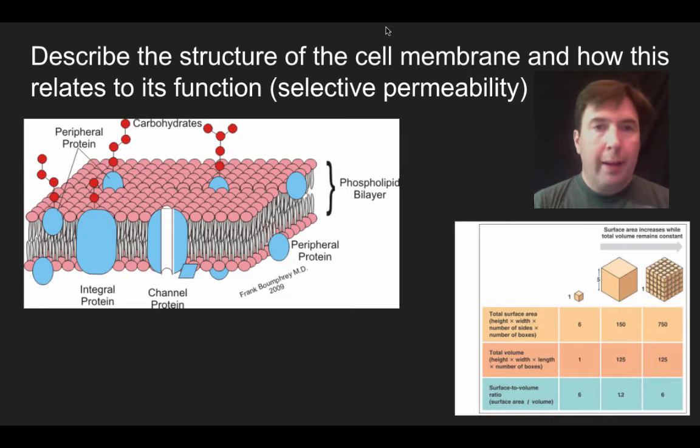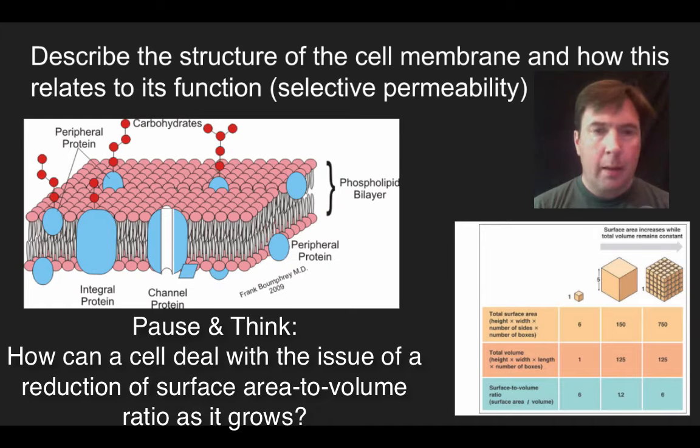So what I'd like you to do is pause and think, and how could a cell deal with this problem if it's growing and all of a sudden its surface area and volume ratio is starting to get small? What would be the solution for that from a cellular perspective? I'll just pause and think. What do you think cells do when their surface area to volume ratio becomes a problem?